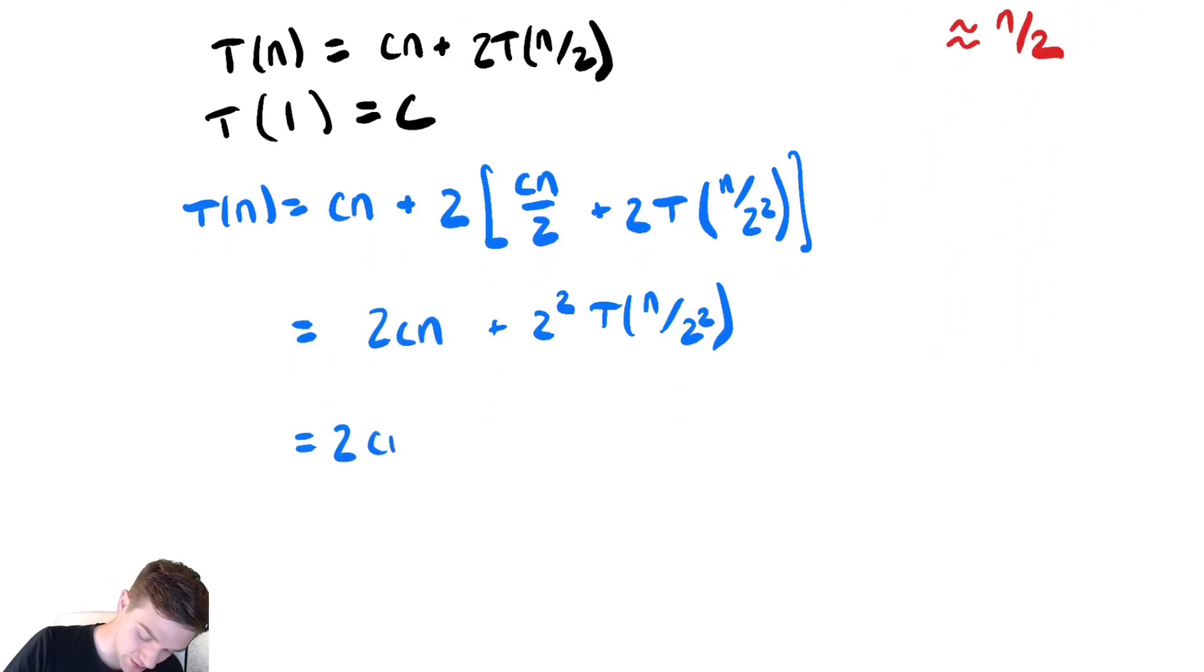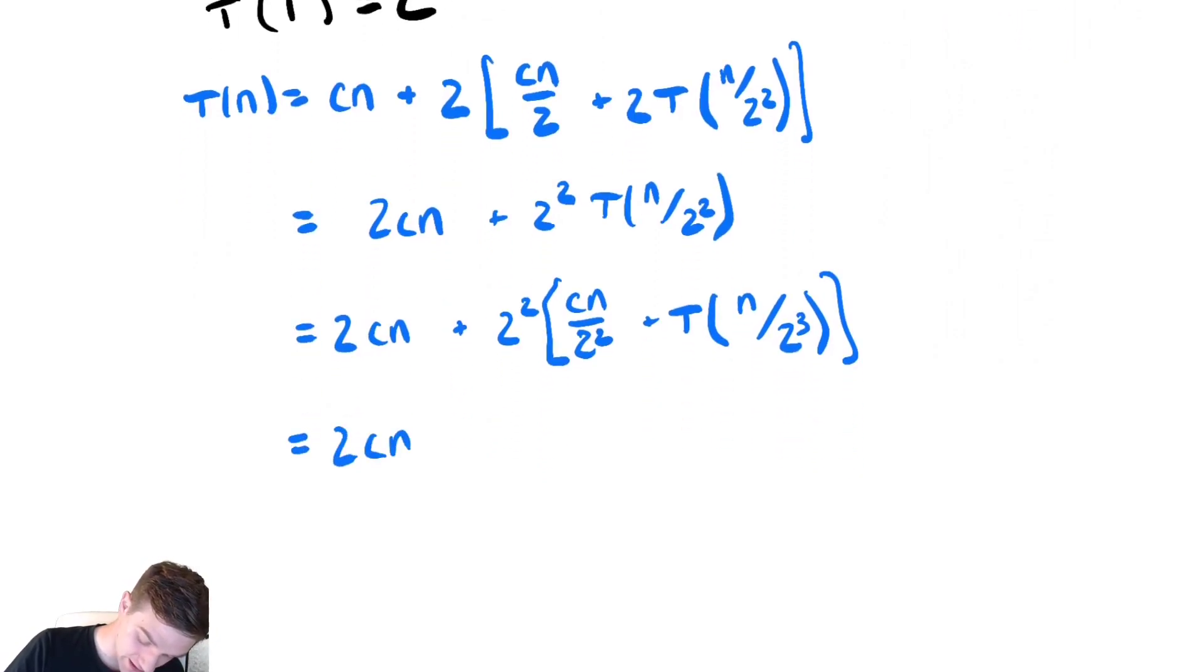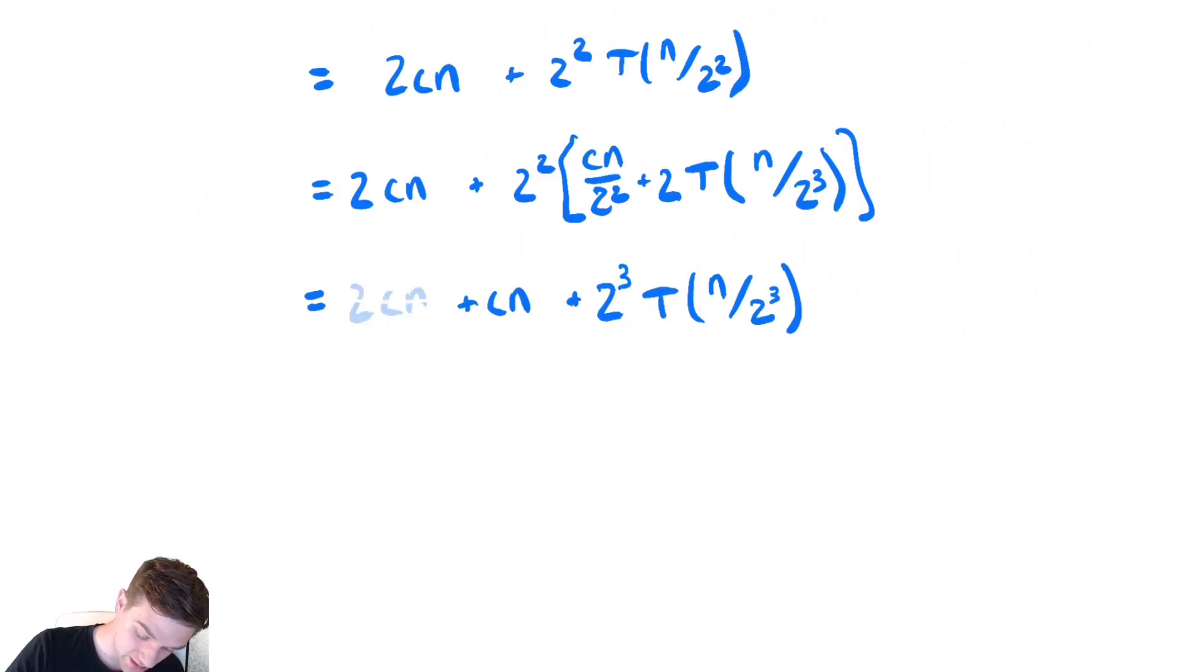Let's do another substitution. We have two cn plus two squared times quantity cn over two squared now plus T(n over two squared) over two, which is n over two cubed. Now distribute the two squared and we get two cn. Now distribute the two squared and we get two cn plus cn plus... Oh, I forgot a two. I apologize. There should be a two in here. Distribute the two squared there and we get two cubed T(n over two cubed). Now group together the like terms again. And we have three cn.